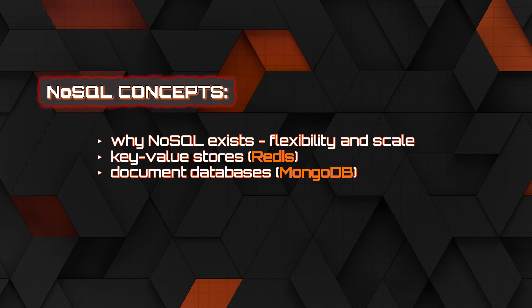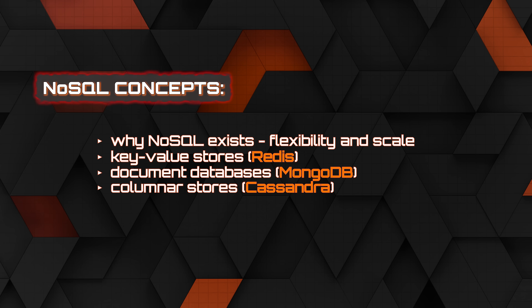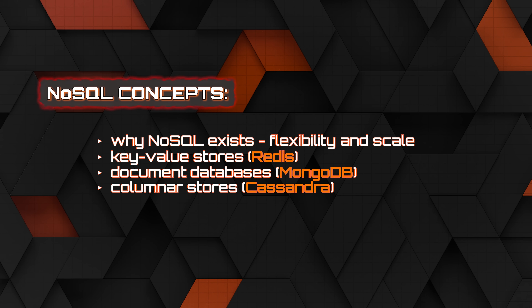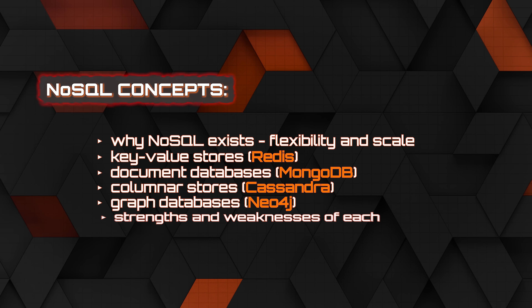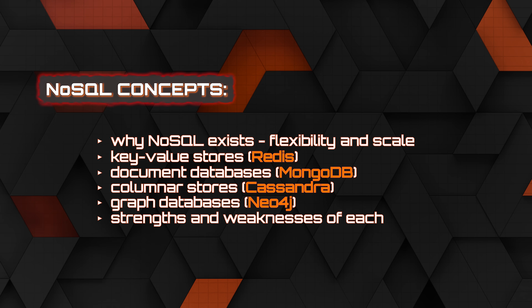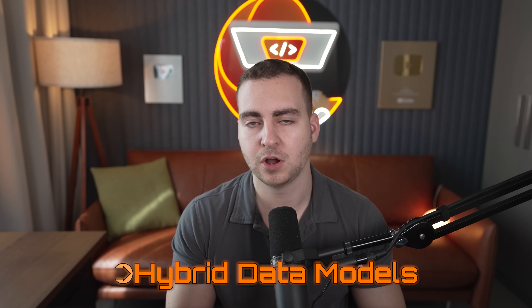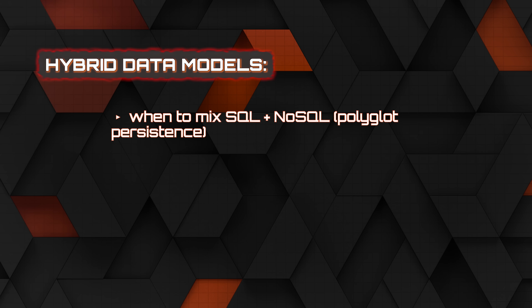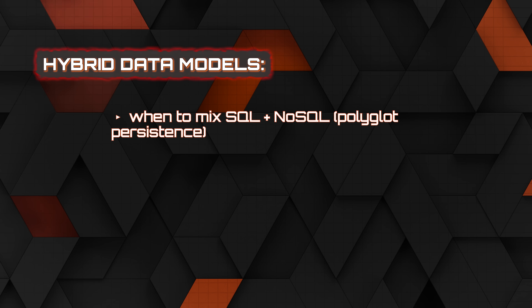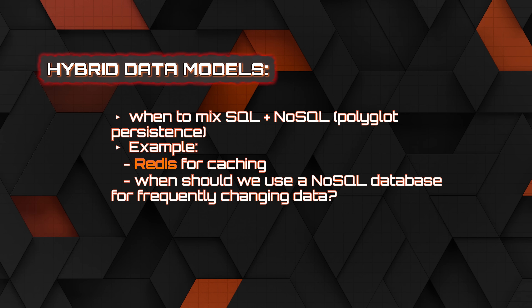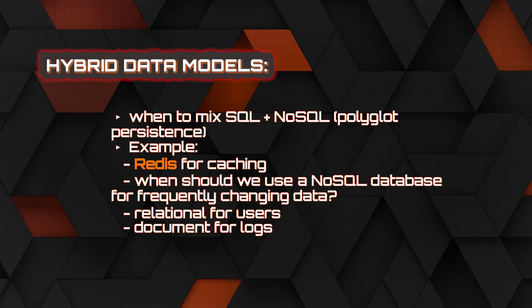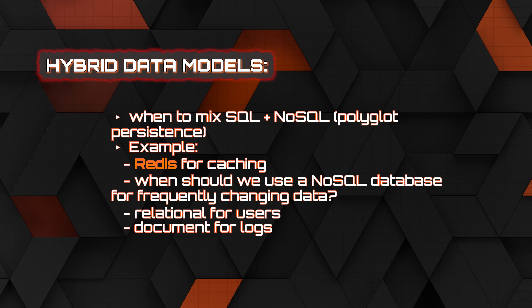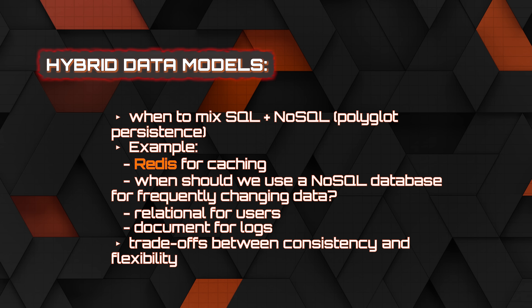Also look at document databases like MongoDB, column stores like Cassandra, vector databases, and graph databases — understanding each one's strengths and weaknesses to decide which to use. This leads into hybrid data models: understanding when to mix multiple databases, such as a SQL database plus a NoSQL database. When do you use Redis for caching? When do you use a NoSQL database for constantly changing data? When do you use strict relational databases? You need to understand the trade-offs between consistency and flexibility and be able to argue why you should use one over the other.